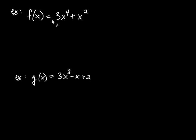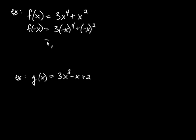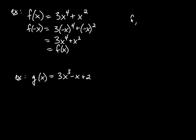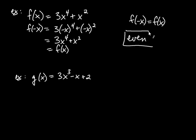For the next function, plugging in negative x gives 3(negative x)⁴ plus (negative x)², which equals 3x⁴ plus x² — because raising to the fourth power and squaring both make the negative give a positive. This is exactly what we started with, so f of negative x equals f of x. The function has even symmetry, meaning if you graph it, the right branch is a mirror reflection of the left branch across the y-axis.